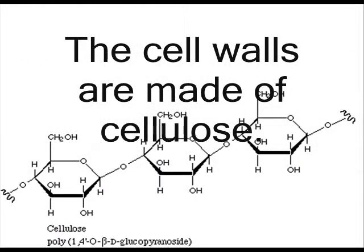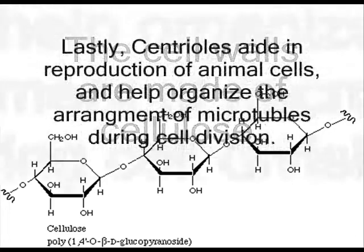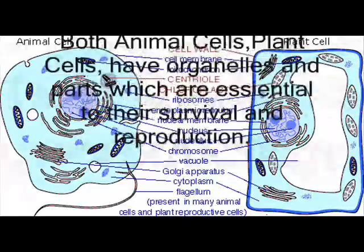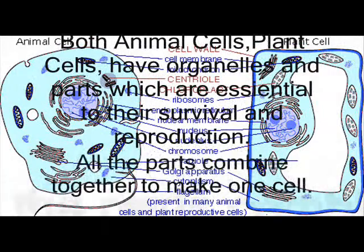The cell walls are made of cellulose. Lastly, centrioles aid in reproduction of animal cells and help organize the arrangement of microtubules during cell division. Both animal cells and plant cells have organelles and parts which are essential to their survival and reproduction. All the parts combine together to make one cell.